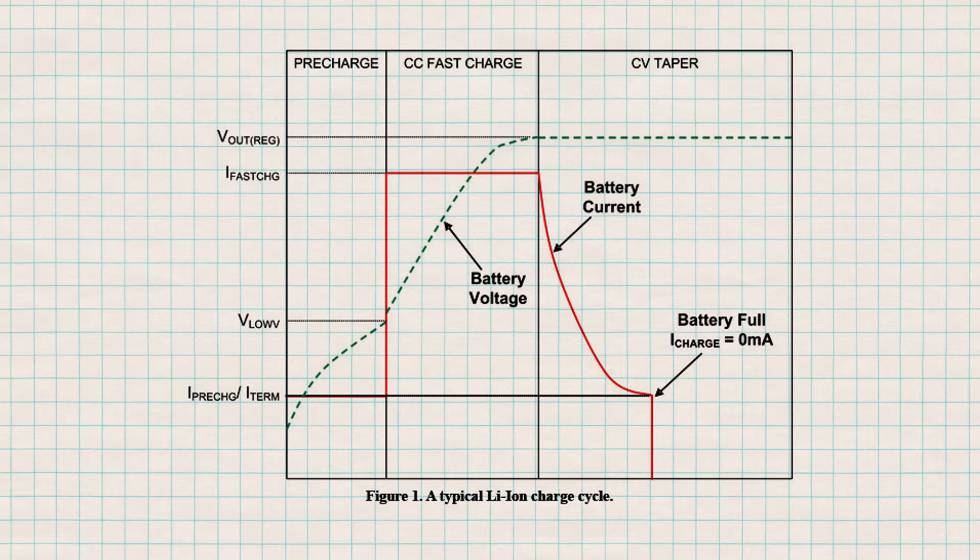Now we are going to observe the battery charging functionality of the BQ51050B. Before we do this, let's briefly look at the charging profile of a lithium ion battery. The blue dashed line represents the battery voltage and the red solid line the charging current. When the battery voltage is below a certain threshold, V low V in the figure, it is charged at a reduced rate. This is known as the pre-charge phase.